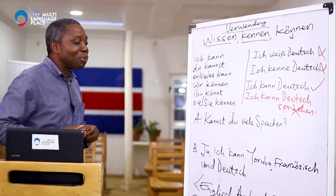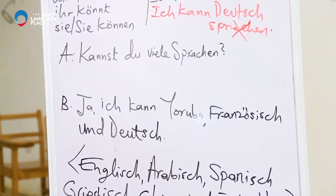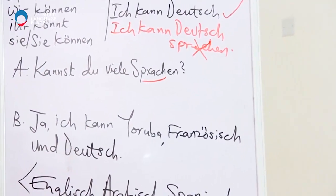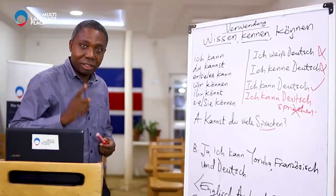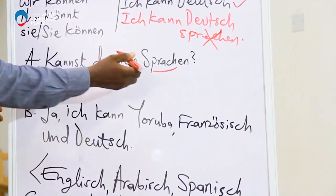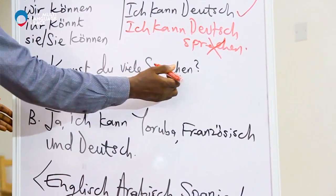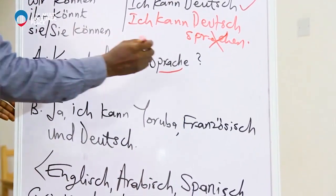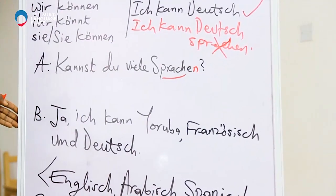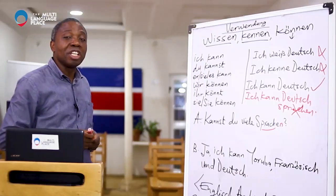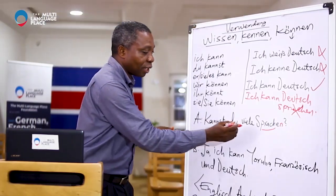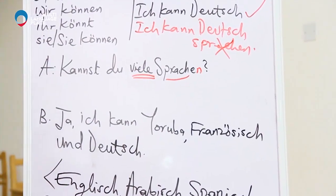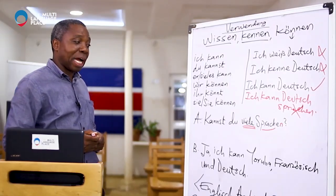The first speaker says, 'Kannst du viele Sprachen?' Here's another word: 'Sprache' means language. Remember the plural — because 'Sprache' ends with 'e' in the singular, the plural will be with 'n.' So 'Sprachen.' 'Viele' means many. 'Kannst du viele Sprachen?' — Can you speak many languages?